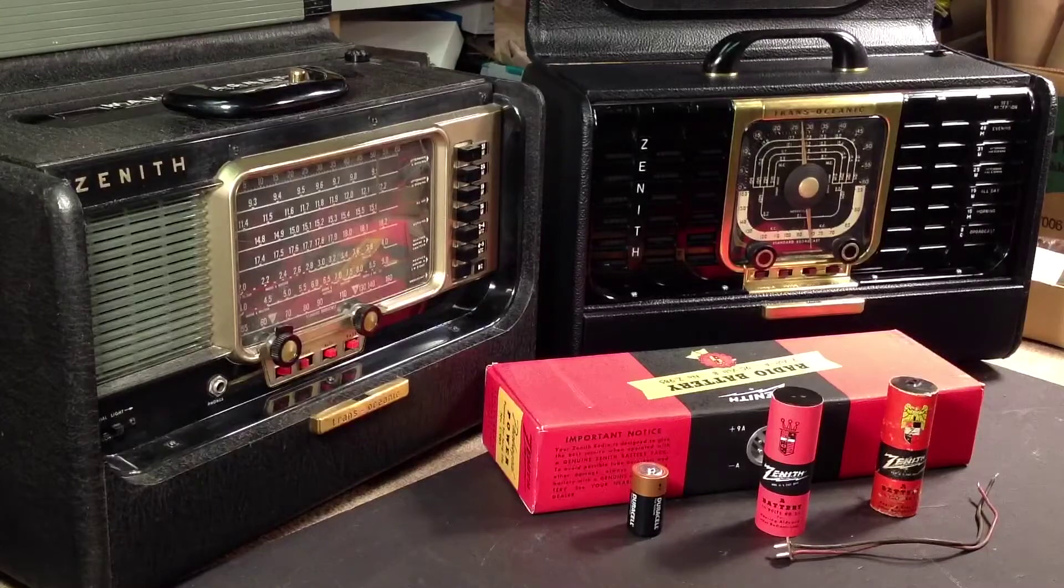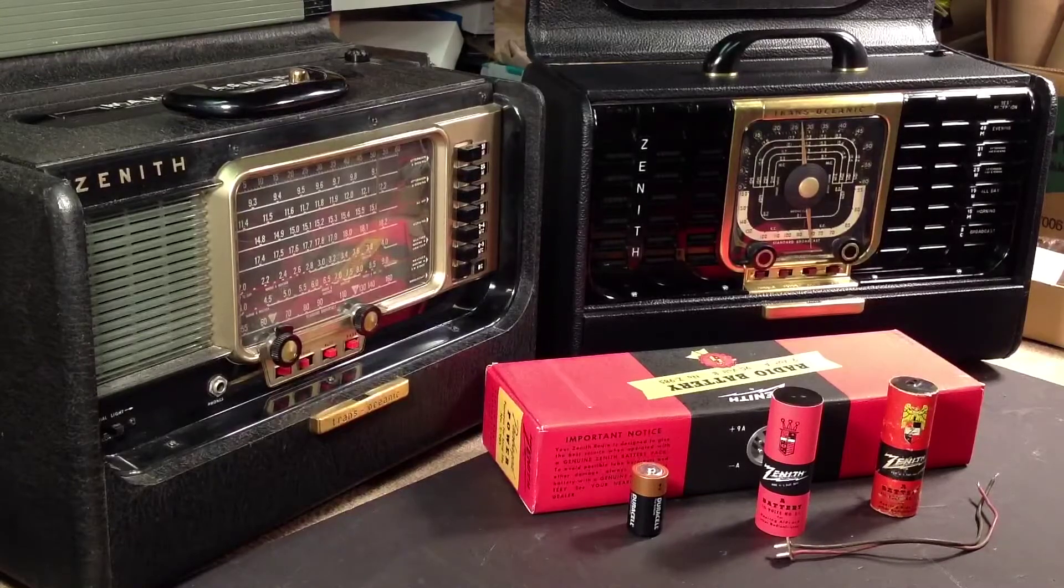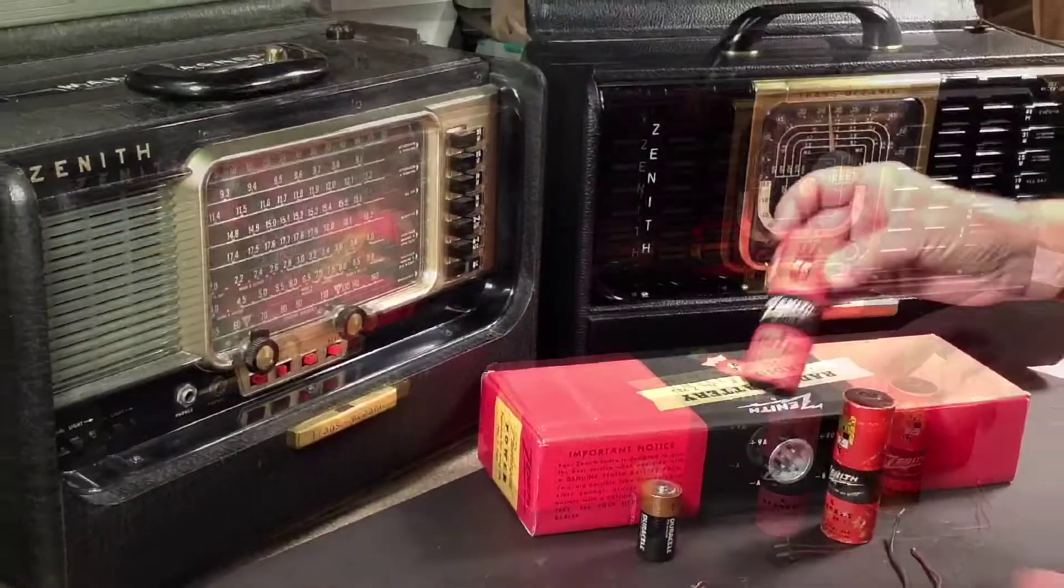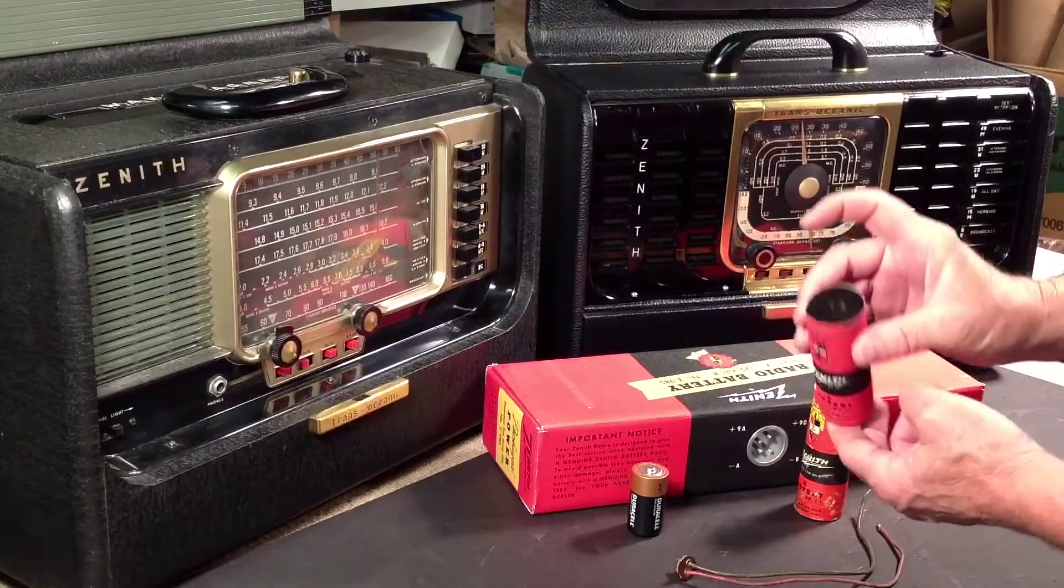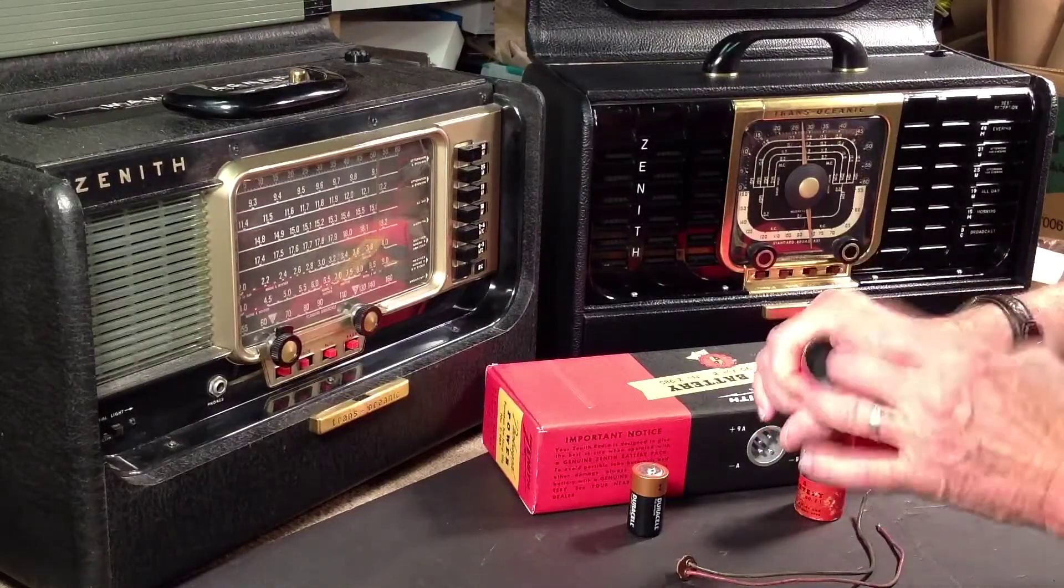Hi, if you've got a 600 series trans-oceanic or an 8G-005 series trans-oceanic, you need a Z1 battery to power part of it.